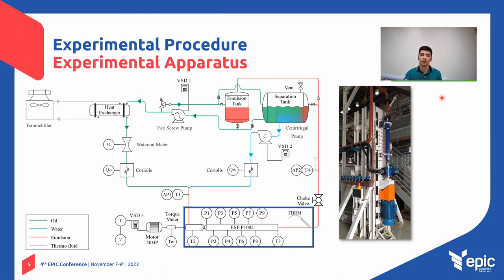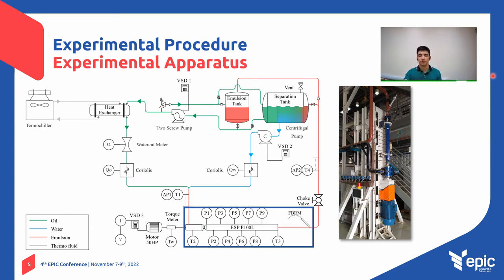Thus, it is possible to carry out tests at different viscosities with the same oil by simply adjusting the temperature range. The ESP test model is a P100 with multiple stages, powered by an electrical motor of 50 horsepower. A back-pressure valve is used to control the pressure.